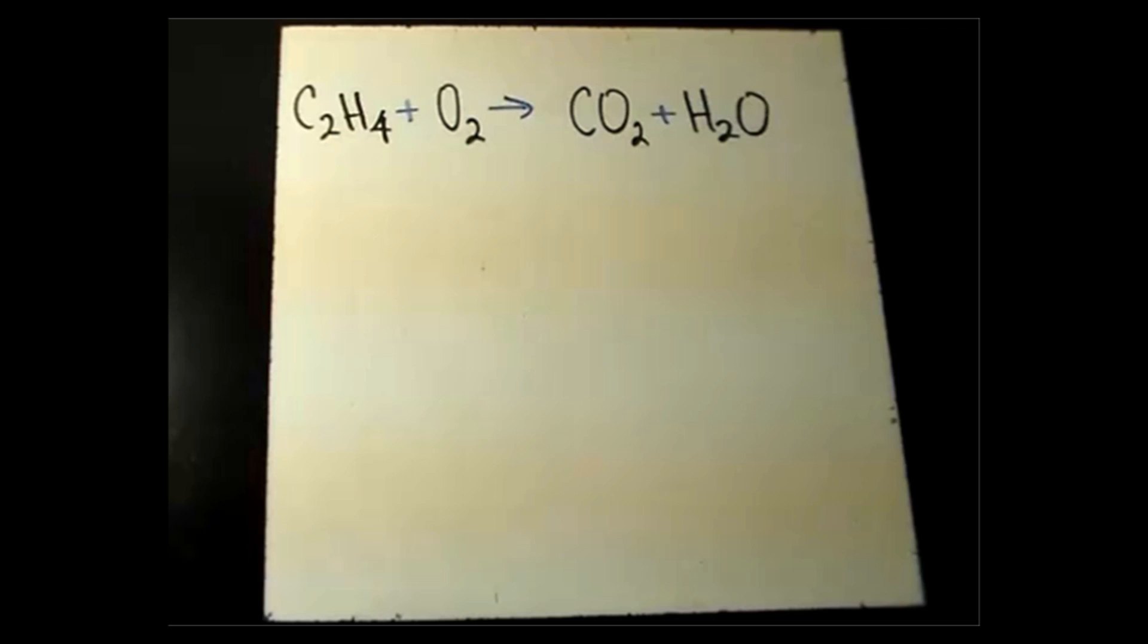I'm going to use a combustion of C2H4 to demonstrate how to balance chemical reactions. In a chemical reaction, the compounds on the left of the arrow, in this case C2H4 and O2, are called the reactants.